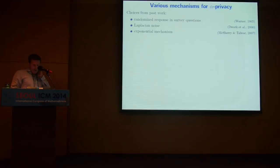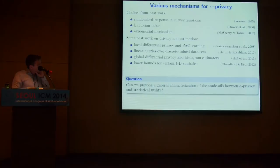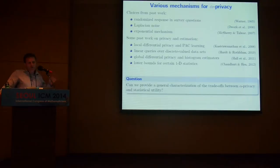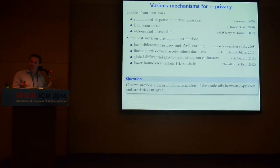There's a long line of work on privacy and estimation. Broadly, people are trying to answer: what are the trade-offs between having an alpha guarantee of privacy and how statistically useful the privatized data is? Obviously adding Laplace noise increases variability. But precisely, how does it depend on alpha, and on dimension and other things in your problem? We'd like to provide a precise characterization of the trade-off between privacy and statistical utility.